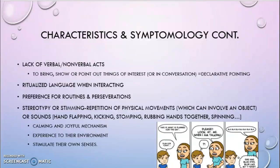Oftentimes they will exhibit ritualized language when interacting, such as echolalia or scripting, which will be discussed further. They also have a preference for routines and they perseverate on things. For example, with a yellow ball, they'll be kind of obsessed with that ball, other things that bounce, or other things that are yellow — similar to a small child obsessed with a teddy bear, except they can perseverate on numerous things. Sometimes it's dinosaurs in general, and someone could know a lot of facts about dinosaurs, or that topic could serve as a reinforcer for them.